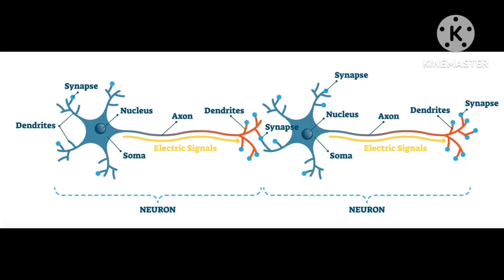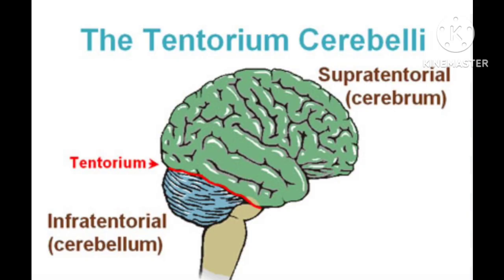There is one more structure in the brain we should know about, called the tentorium cerebelli. It is a fold of dura mater that separates the cerebrum from the cerebellum. The term supratentorial refers to the cerebrum, and infratentorial refers to the cerebellum. So the tentorium separates the cerebrum from the cerebellum.